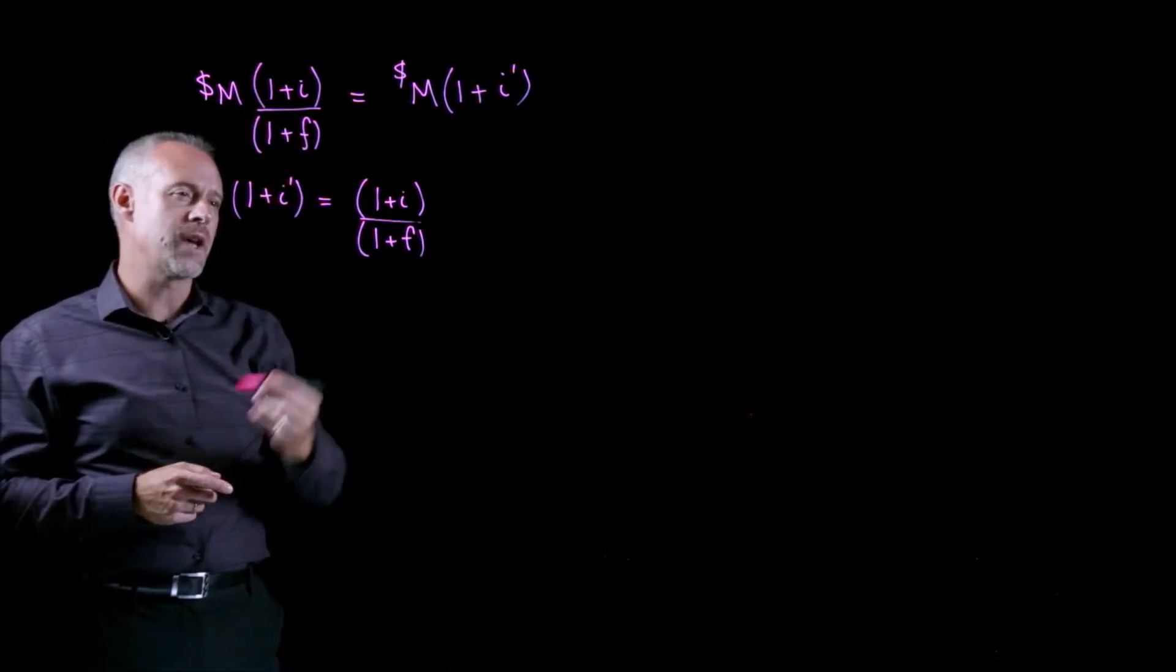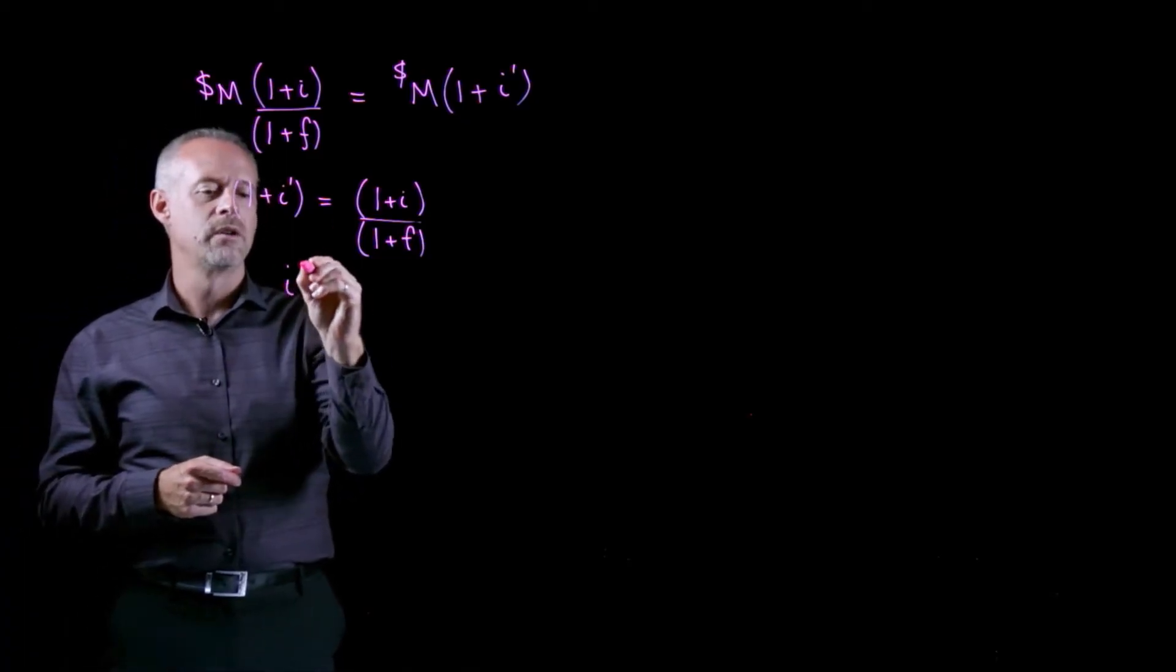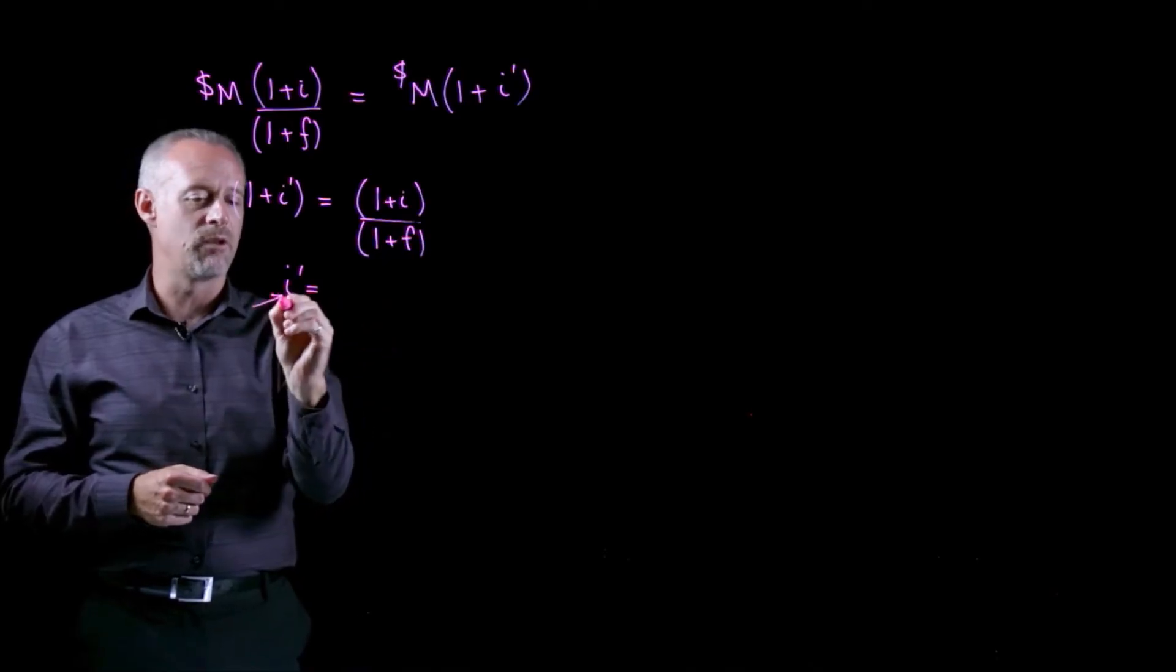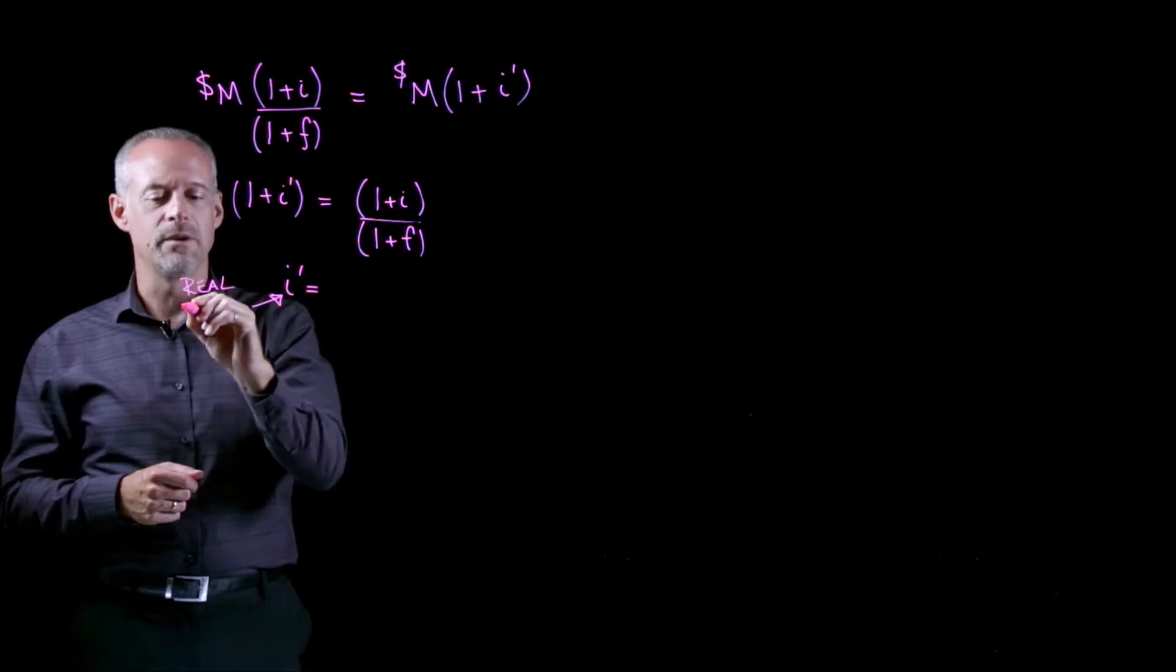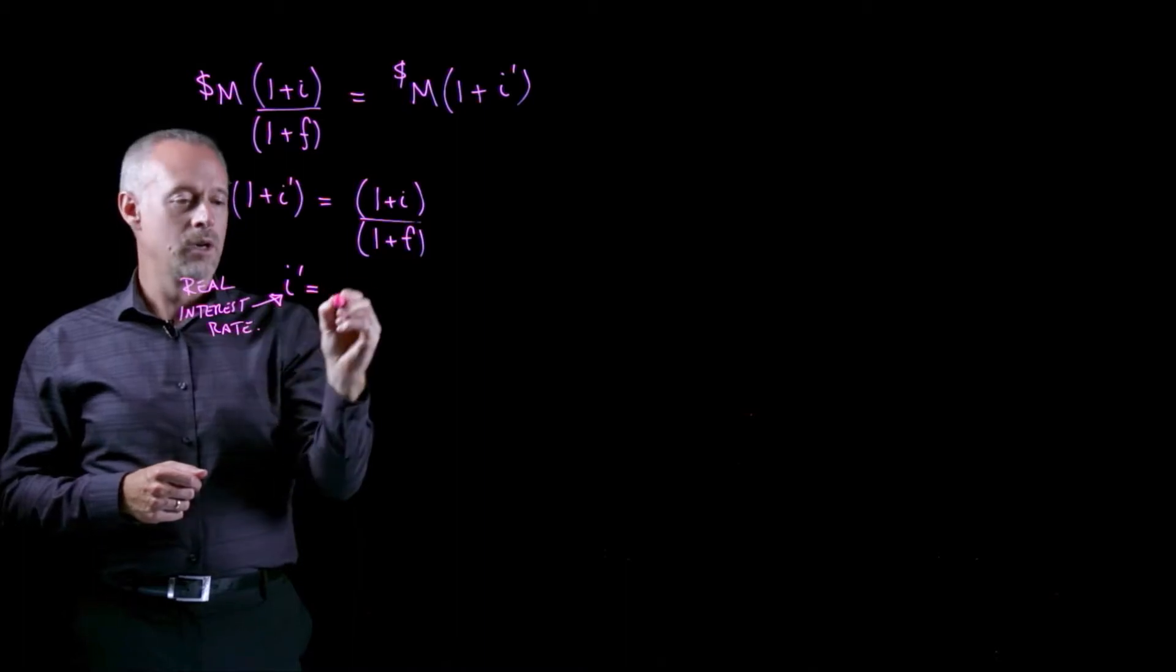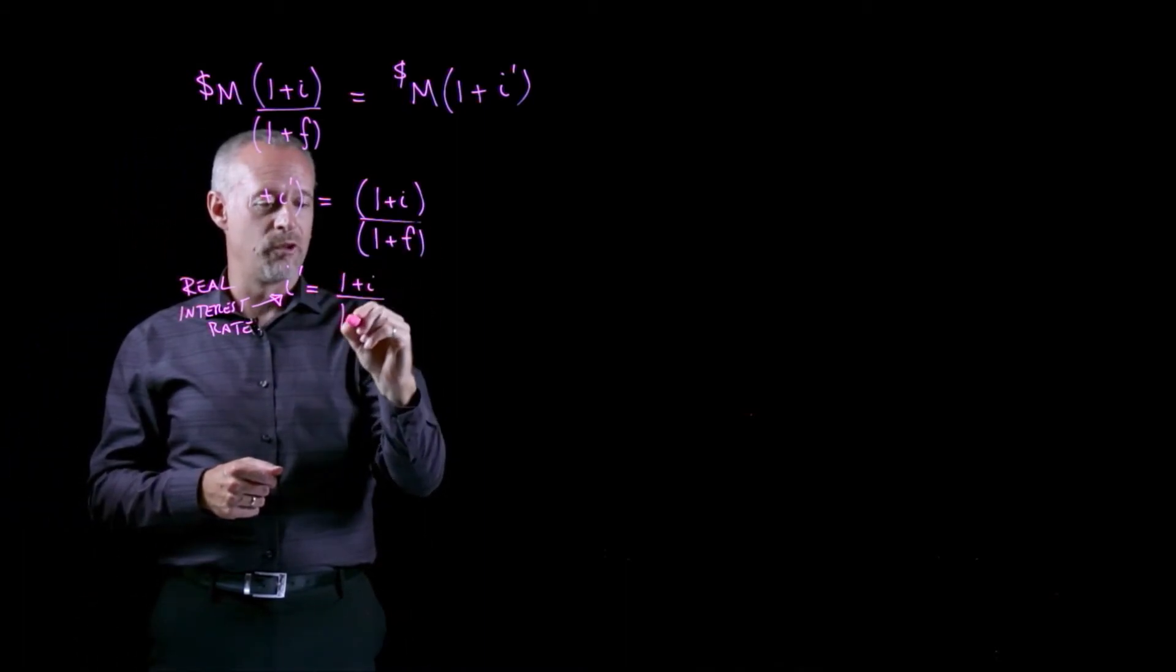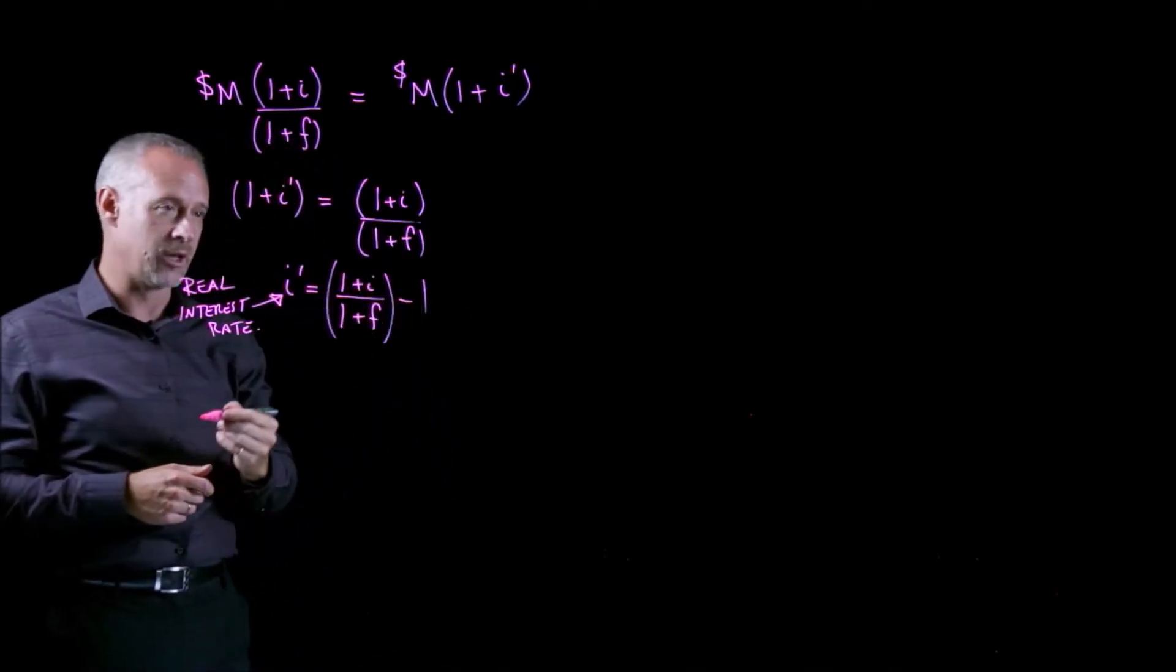So in this case, we could simply rearrange this formula to be able to calculate this value, and I'll write it in here, this is the real interest rate, but I would define that as (1 + I) over (1 + F) minus 1. I've just rearranged this formula.